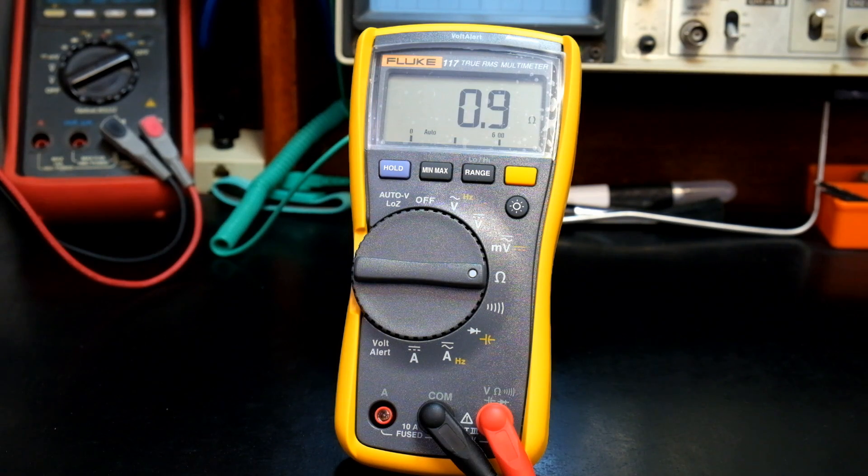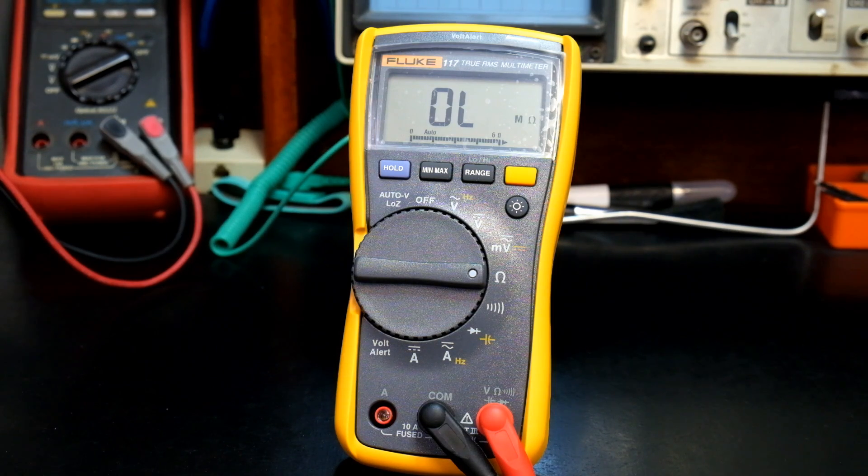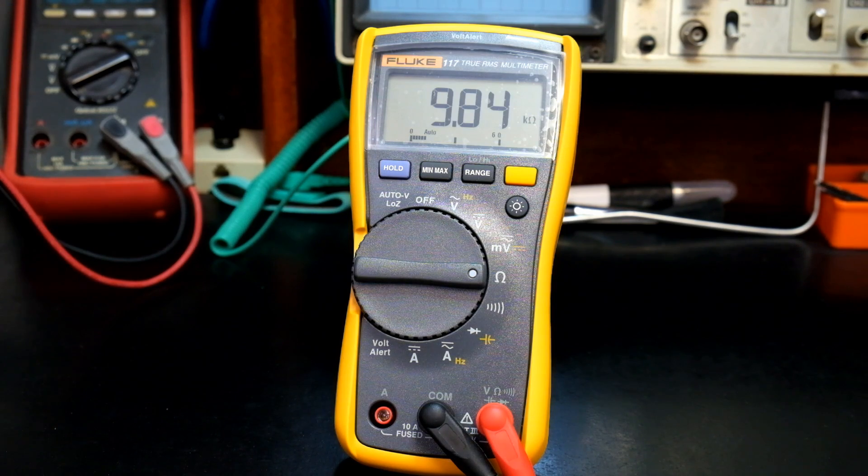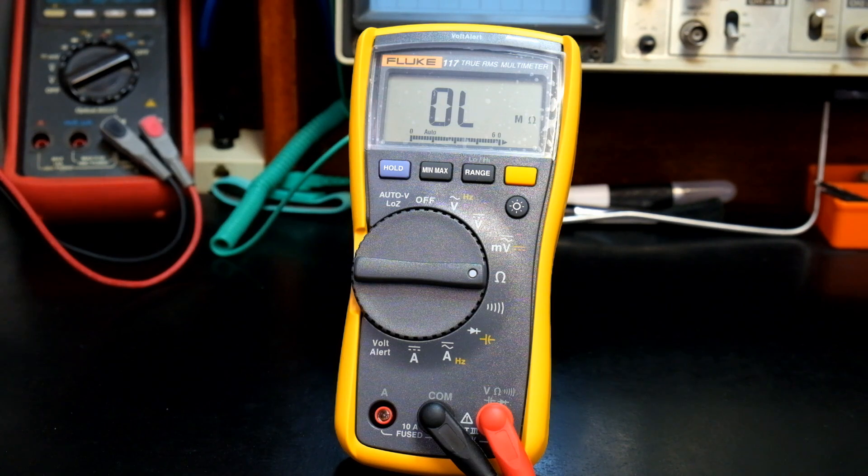So here we have a 1 ohm resistor. And as you can see that's 0.9. So that's telling me this meter is actually pretty accurate on low resistance, because I know it is a 0.92 ohm resistor from a low ohms test that I did. Like I said I'm not going to get into testing hundreds of different resistance values just to check if it's accurate. You can almost guarantee it's going to be well within spec. There we go. One more resistor here. 10K. Showing 9.84K. Still pretty good. Happy with that.